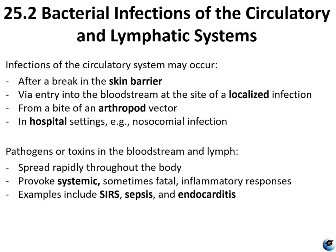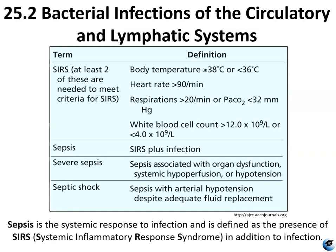Pathogens or toxins in the bloodstream and lymph usually spread rapidly throughout the body, causing systemic and sometimes fatal inflammatory responses. Some examples include SIRS, sepsis, and endocarditis. Sepsis is the systemic response to infection and is defined as the presence of SIRS — systemic inflammatory response syndrome — in addition to infection.